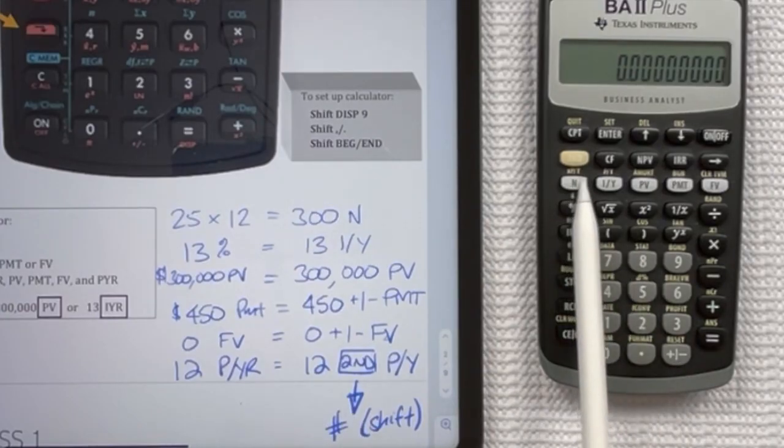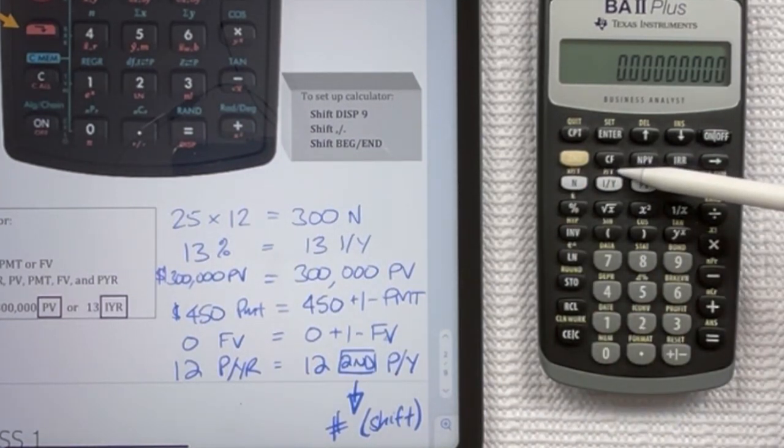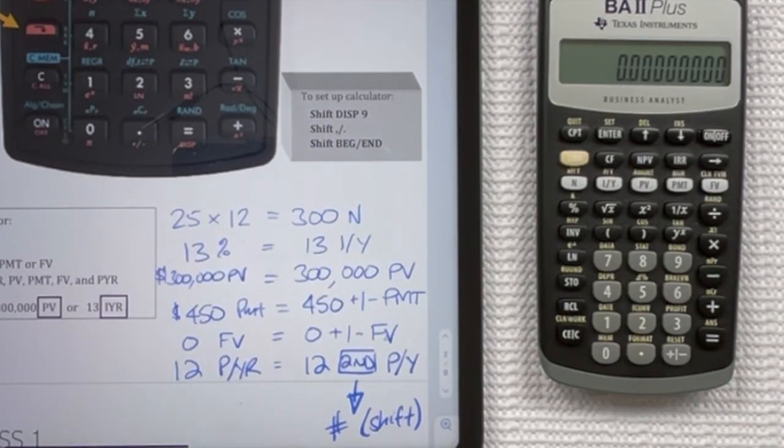And then your location keys are here in white. And the PY is actually above your IY key on this calculator. So slightly different configuration and locations, but nothing too crazy that you can't handle.